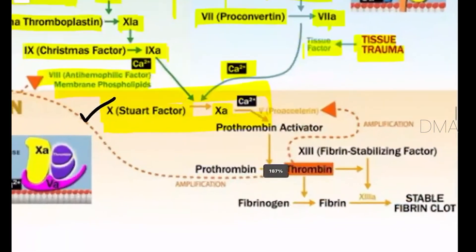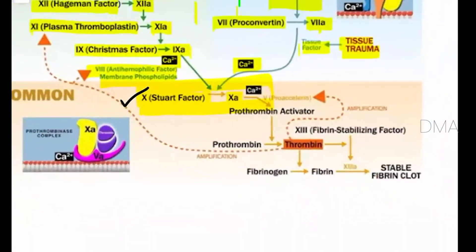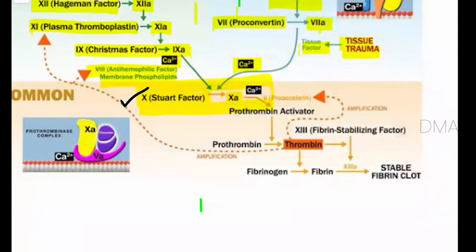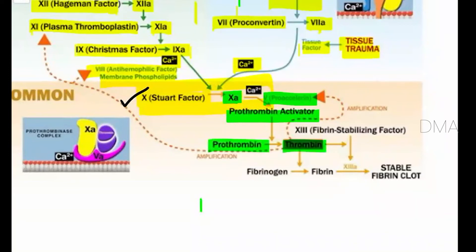Once both the extrinsic and intrinsic mechanisms enter the common pathway, the role of the common pathway is the activation of prothrombin activator. This prothrombin activator is activated by activated Factor 10 together with Factor 5, that is pro-accelerin. Factor 5 is also released during primary platelet-plug formation. This activated prothrombin activator then converts prothrombin into thrombin.